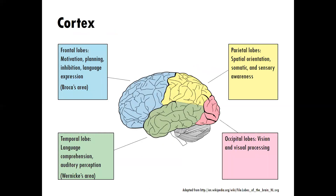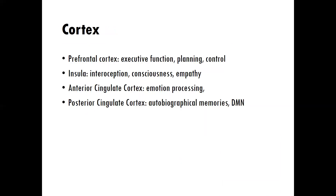Here are the four lobes of the cortex that I had mentioned. It's worth knowing the function of each of these lobes. For example, you should know the frontal lobes are associated with motivation, planning, inhibition, and language expression. You should know the function of each of the four areas. In terms of the cortex, we're going to explore different parts that are important, such as the prefrontal area, which is of course associated with executive function, planning, and control — sometimes called the CEO of the brain.